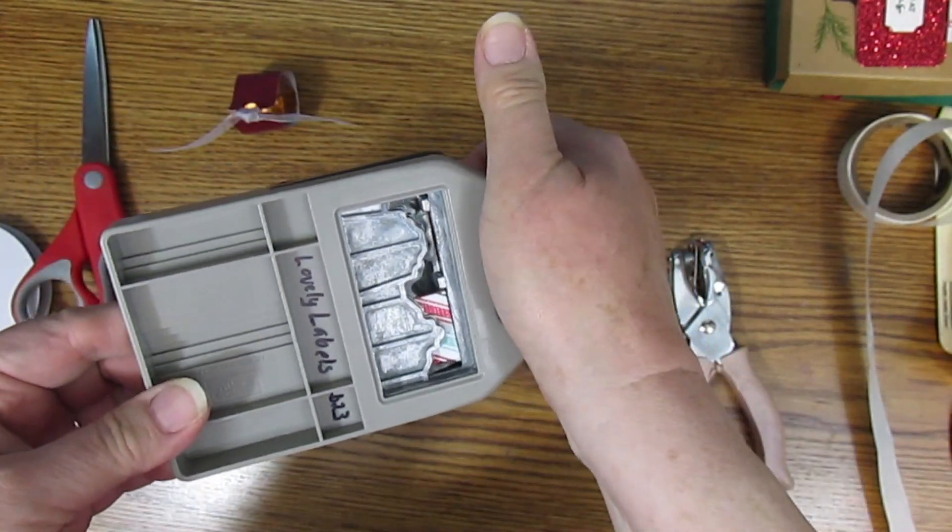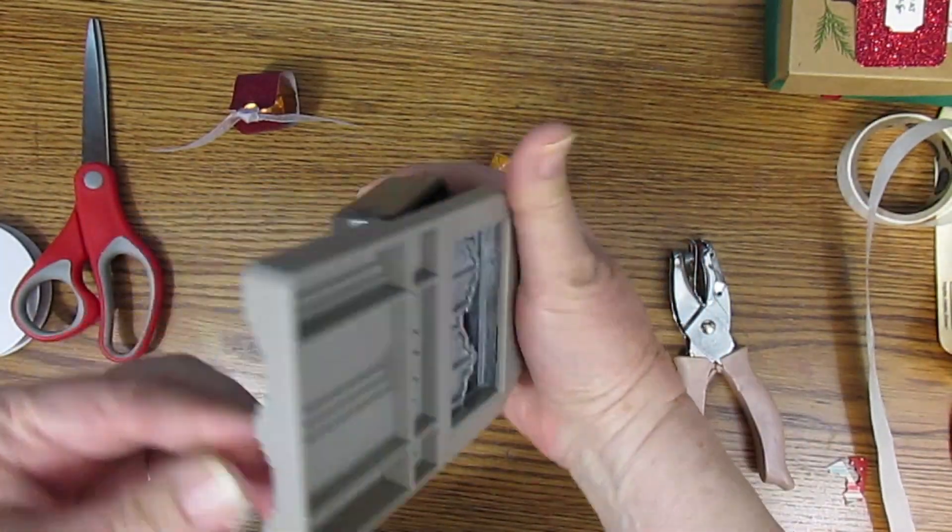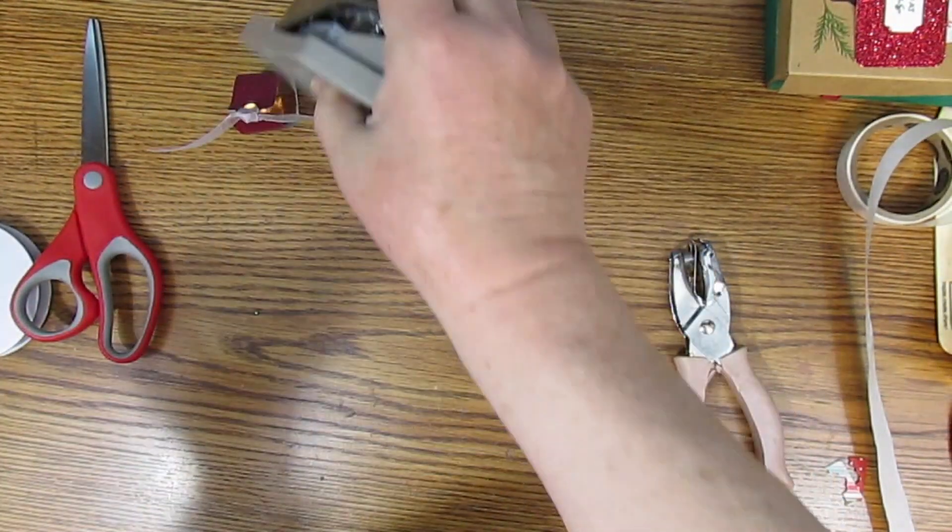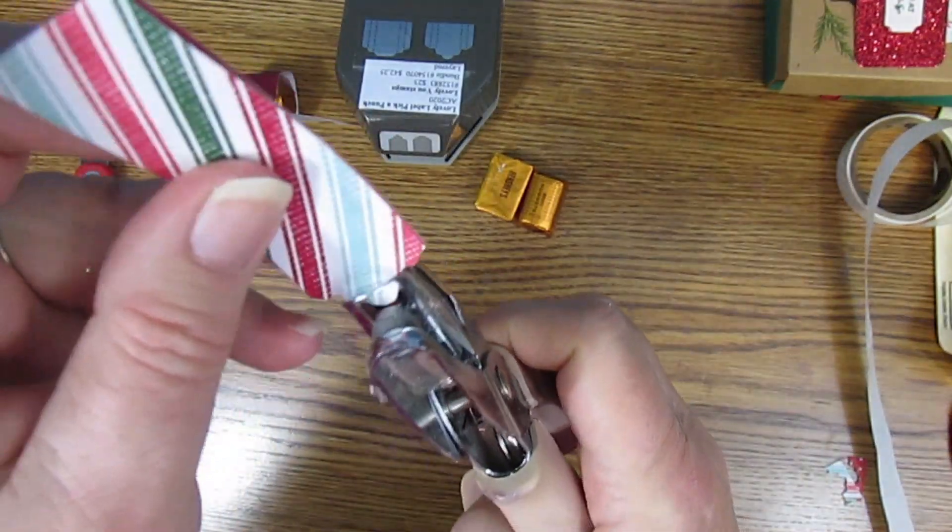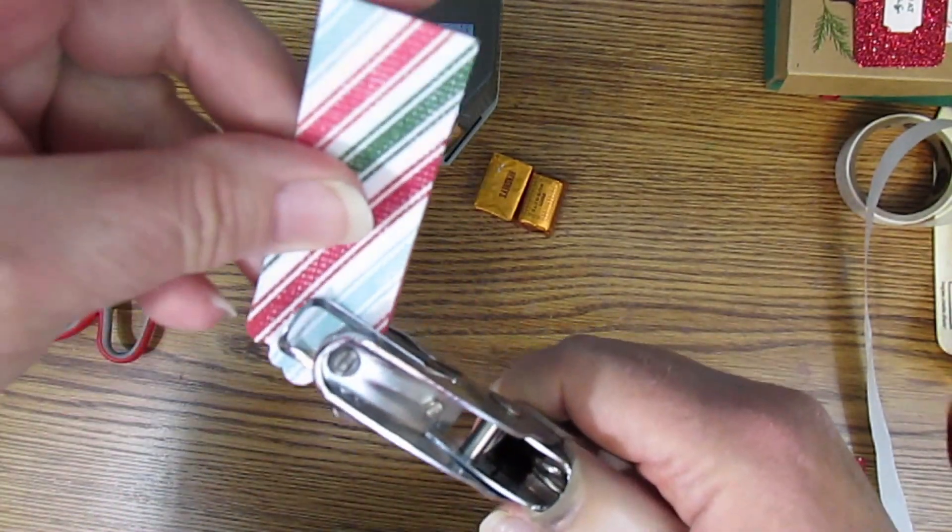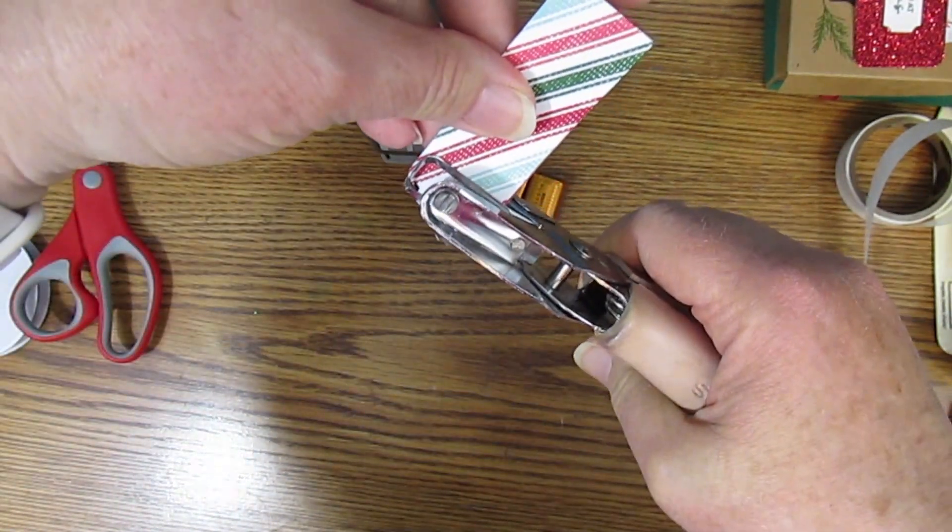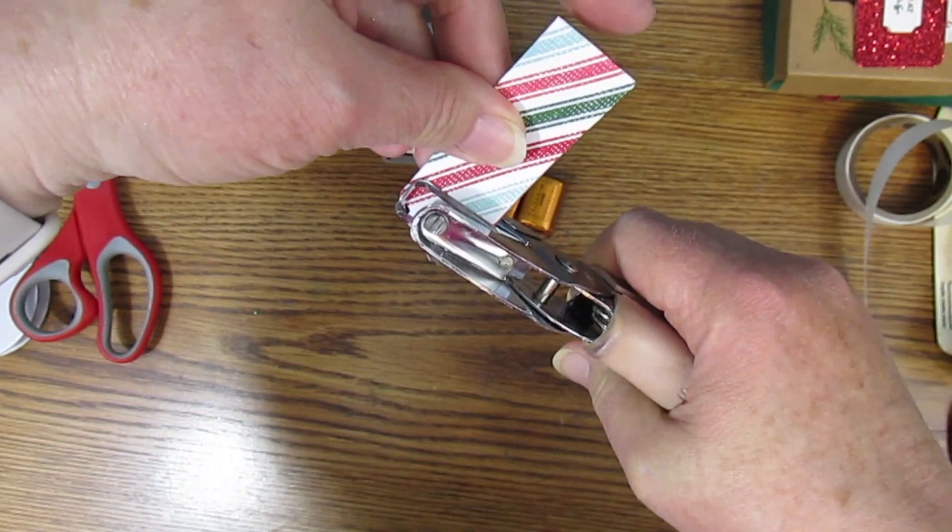If it's thicker paper you will need to do each end separately and you might as well punch our hole now too. This is just a quarter inch hole punch.